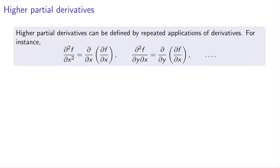We can also define higher partial derivatives by repeated applications of partial derivatives. For example, you could take the second derivative of f with respect to x by applying the operator ∂/∂x twice on the function, calculating the second derivative with respect to x keeping y constant. We can also have mixed partial derivatives, where we take derivatives with respect to two different variables x and y — first the derivative with respect to x keeping y fixed, then the derivative with respect to y of the result keeping x fixed.